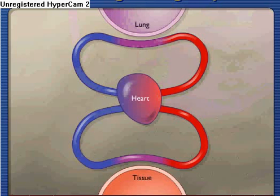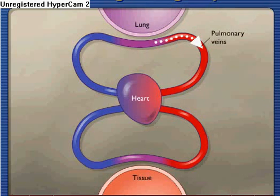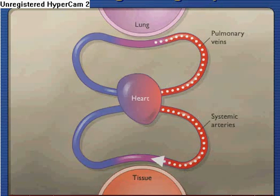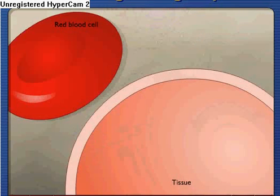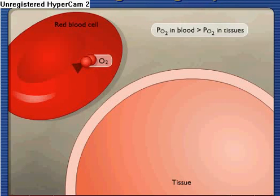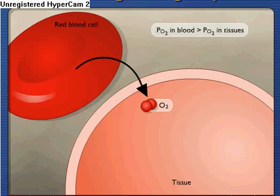Oxygen-rich blood is carried through pulmonary veins to the heart and then pumped through systemic arteries to the body. The PO2 in the blood is higher than the PO2 in the body tissues, so oxygen diffuses out from red blood cells at the body tissues.